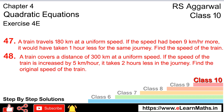Let's do question number 47 of exercise 4E on quadratic equations. Question number 47: a train travels 180 km at a uniform speed. If the speed had been 9 km per hour more, it would have taken 1 hour less for the same journey.